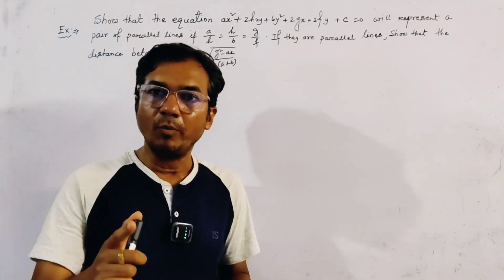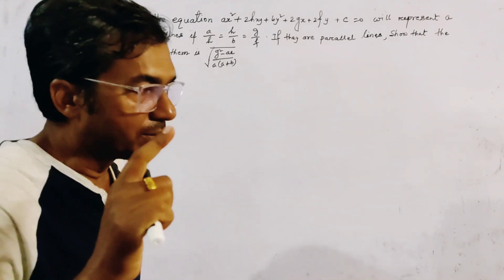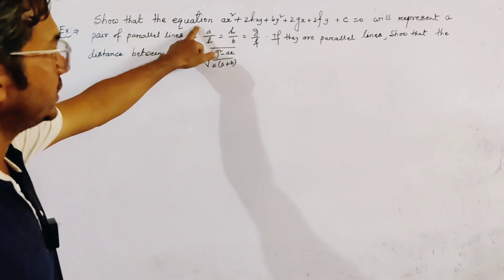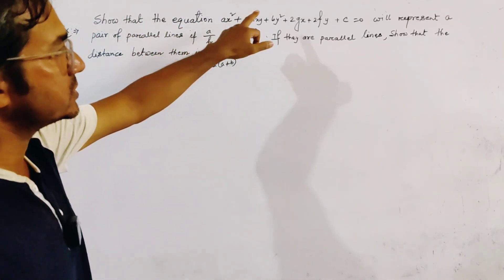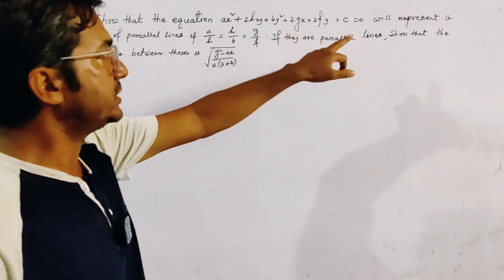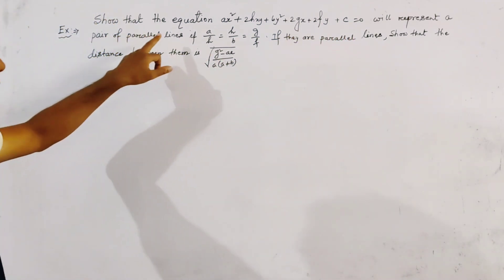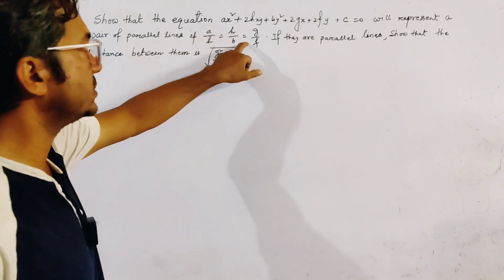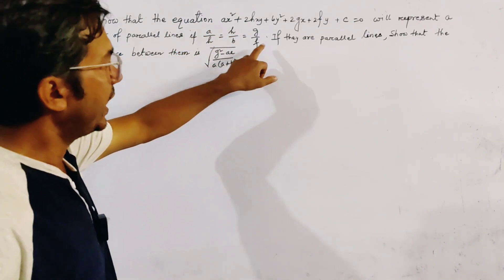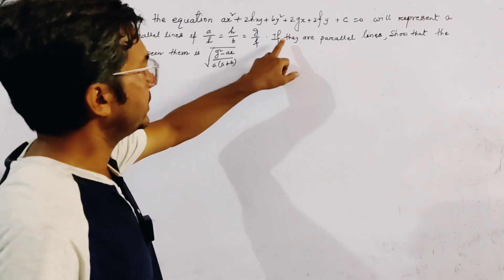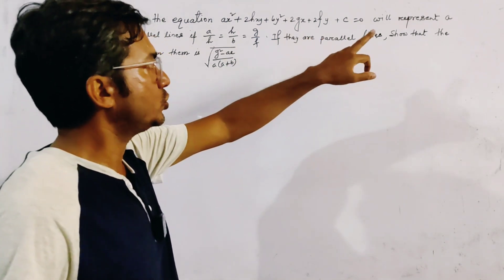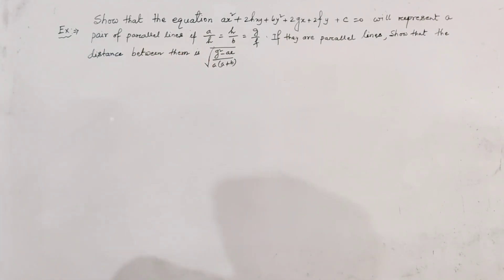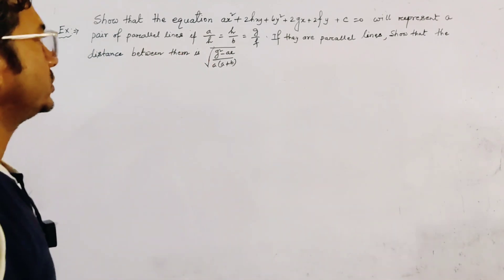Today's problem is from pair of straight lines. The problem states that the general equation of second degree will represent a pair of parallel lines if A/H is equal to H/B, which is equal to G/F. Also, the distance between the parallel lines is given by a specific formula. We will first prove the condition of parallelism.